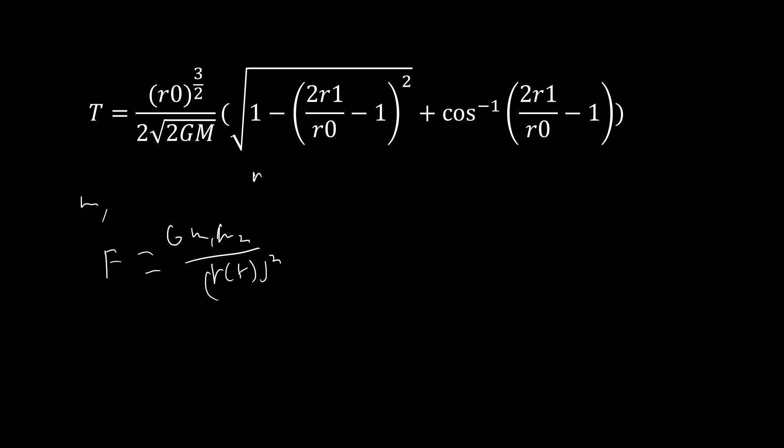So r(0) equals r and that's just our starting position. And this means that the acceleration experienced by object number one is going to be G m2 over r(t) squared.